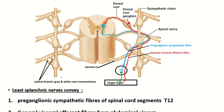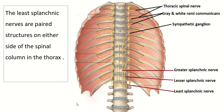Regarding the course of the least splanchnic nerve: here you can see the greater splanchnic nerve, and just lateral to it is the lesser splanchnic nerve. Just lateral to the lesser splanchnic nerve is the least splanchnic nerve. It is formed in the thorax and then leaves the thorax to enter the abdomen.